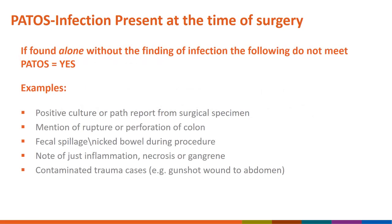Here is some guidance regarding what is not a PATOS. If the only finding is an organism from a culture obtained in the OR or on a pathology report from a surgical specimen, it is not a PATOS. However, if the culture was taken from an abscess or pus, this is a PATOS equals yes for a subsequent SSI at that same level. If a rupture or perforation of the colon has occurred but there is no evidence of infection, this would not be a PATOS. Fecal spillage or a nicked bowel during a procedure would also not be a PATOS — this is a complication, but there was no infection caused by this at the time of surgery. Inflammation, necrosis, or gangrene alone is not a PATOS. Fresh traumas that are contaminated cases do not necessarily meet PATOS; for example, a fresh gunshot wound to the abdomen is an emergency trauma case with a high wound class, but it would not have had time for infection to develop.